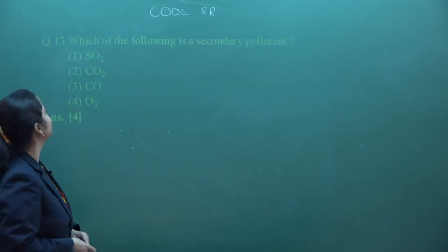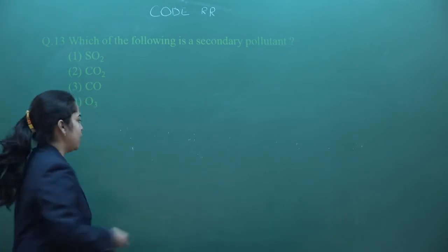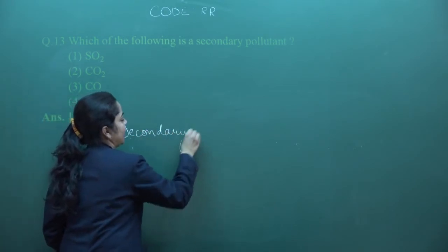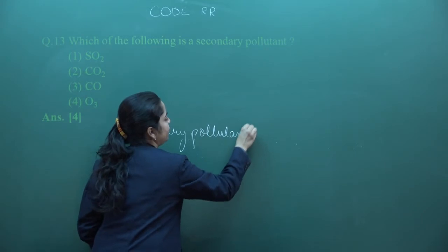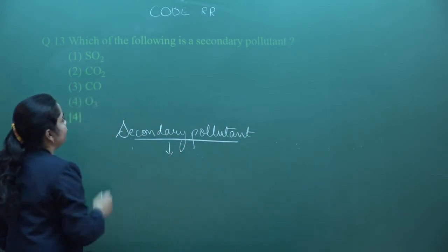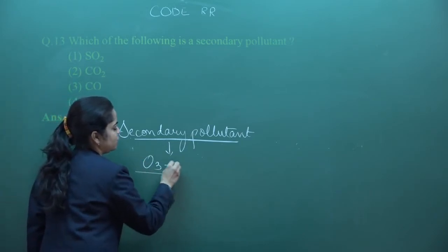The next question is question number 13. Which of the following is a secondary pollutant? When we talk about secondary pollutants, they are formed by the activity of primary pollutants. Here one option given is ozone.